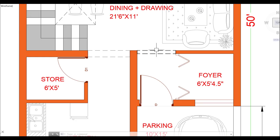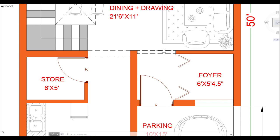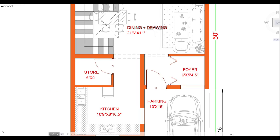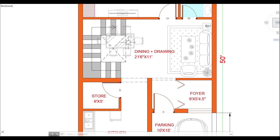As we go a little further, you will see a partition. I have not given a door here — people can add a door if needed and the cost is manageable. We can give a partition wall with wooden work which will look good at home. As we enter, you will see the dining and drawing area, which is 21 feet by 11 feet.